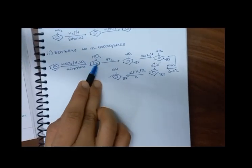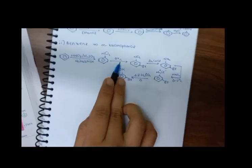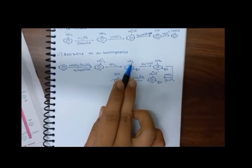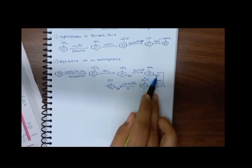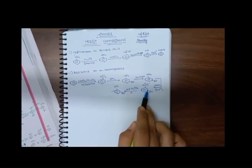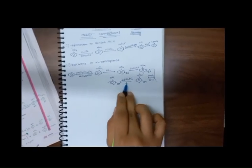To recap: we took Benzene, did Nitration to get Nitrobenzene, treated with Bromine to get Metabromo Nitrobenzene, used Sn/HCl to get Aniline with meta-Bromine, treated with HNO2 at 0–5°C to get meta-bromo Benzene Diazonium Chloride, then used dilute H2SO4 with heating to get Metabromophenol.